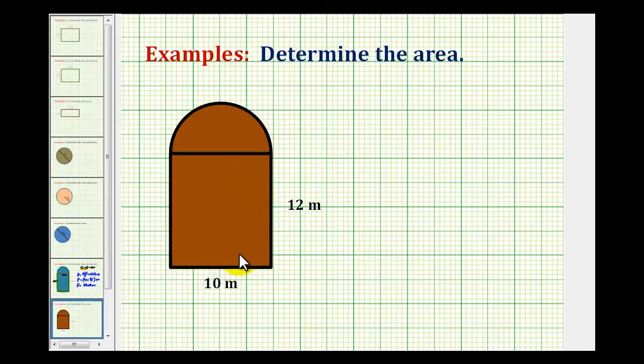So to determine the area of this rectangle, we'll use the formula area equals length times width. Go ahead and label 12 meters the length and 10 meters the width.